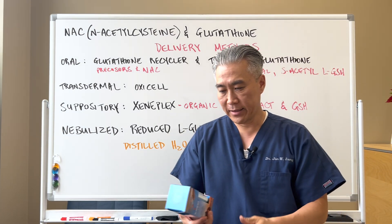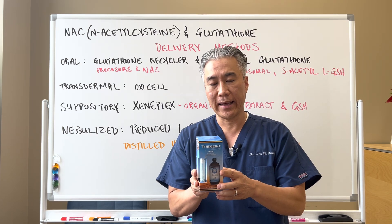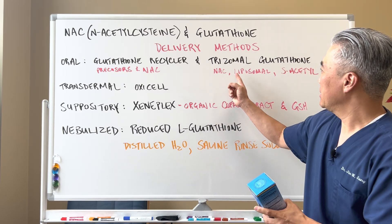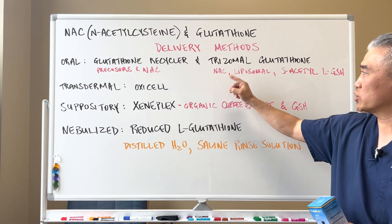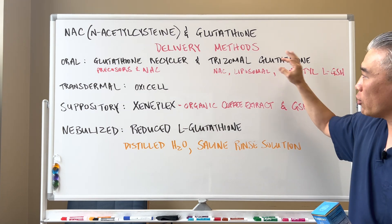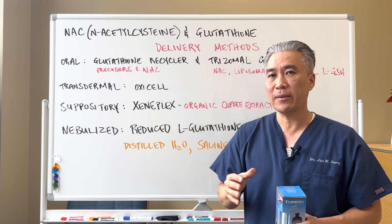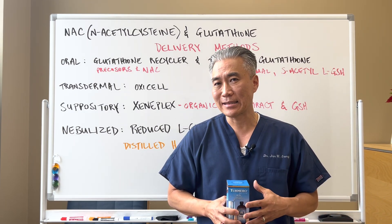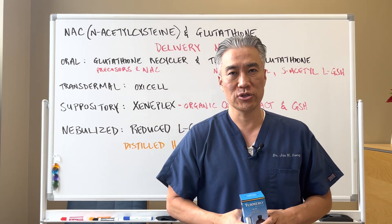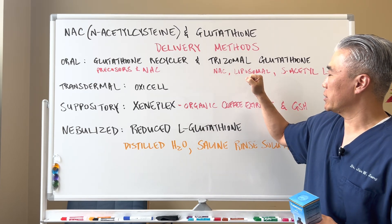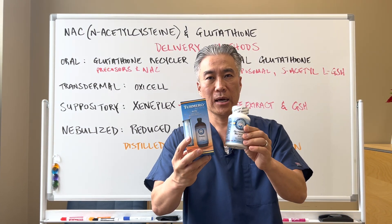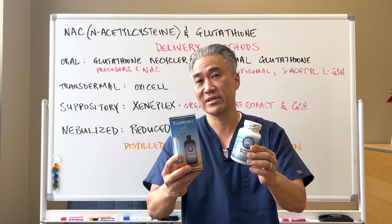The other oral delivery method is a product called Tumero Active. This has L-glutathione, acetyl glutathione, NAC as a precursor for producing glutathione, liposomal glutathione, and S-acetyl L-glutathione all in one. Because glutathione breaks down very easily in the gut, the idea is to use different forms to bypass the gut and get it absorbed better in the GI tract. That's why they formulated liposomal and acetylated versions.